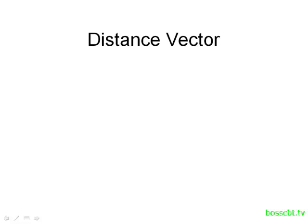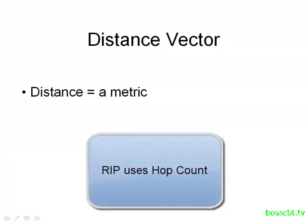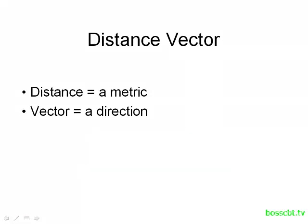Let's begin by taking a look at what distance vector actually means. We could rename it distance direction — that might help us understand it a little better. For distance, we're really talking about a metric. All routing protocols use a metric to provide some measurement to the routes they're advertising and sharing. If you remember with RIP, the metric was the hop count. Vector is just another way of saying a particular direction — where do I go in order to get to this route?